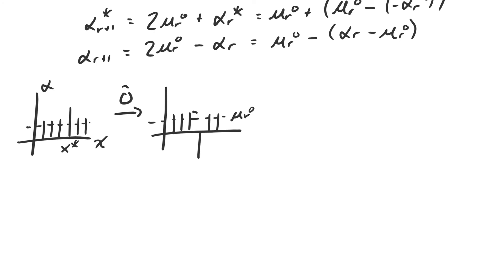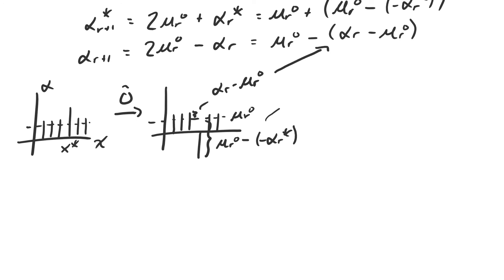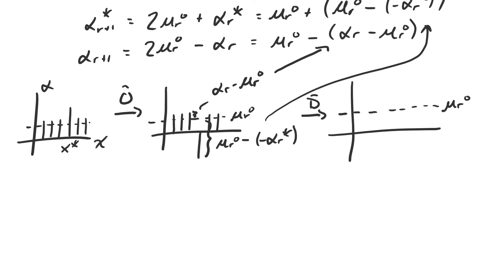On the plot, the height between α_r and μ_r is α_r minus μ_r, and the larger height is the difference between μ_r and negative α_r*. These are precisely the quantities added or subtracted from μ_r to get the new coefficients. So, as far above μ_r as α_r is, α_{r+1} is that far below μ_r; and as far below μ_r as negative α_r* is, α_{r+1}* is that far above μ_r. The subroutine reflects these amplitudes about μ_r.